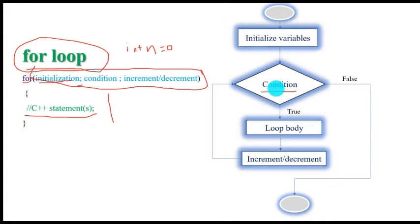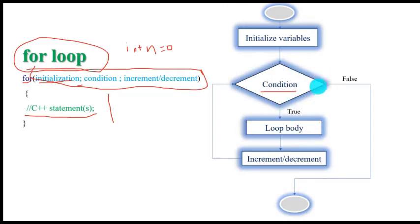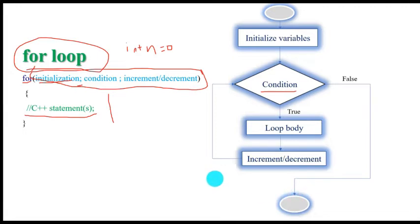If the condition is again true, the loop body is executed, and this iteration continues until the condition is false. If the condition is false, it directly exits from the loop and displays the result or executes the next instruction if there is one.